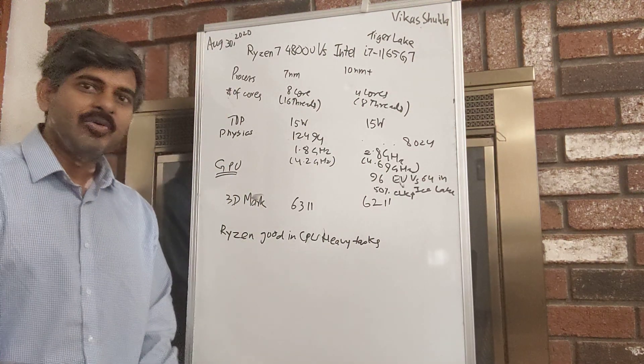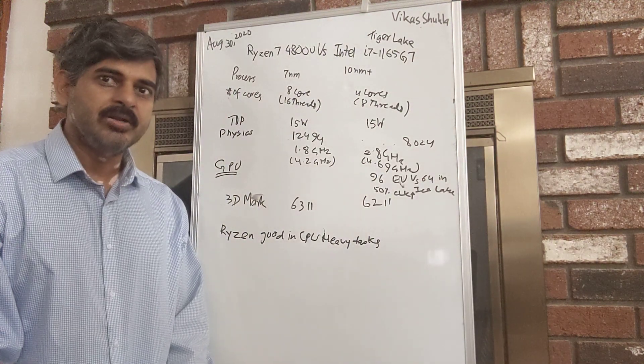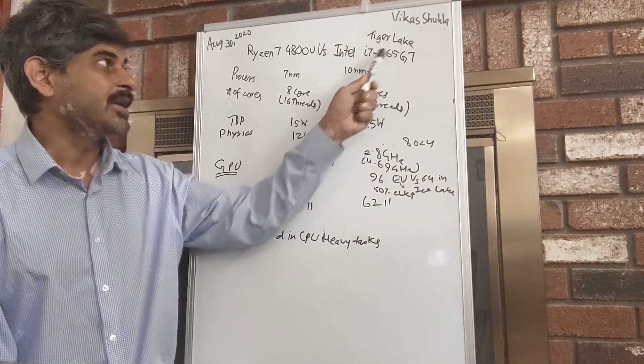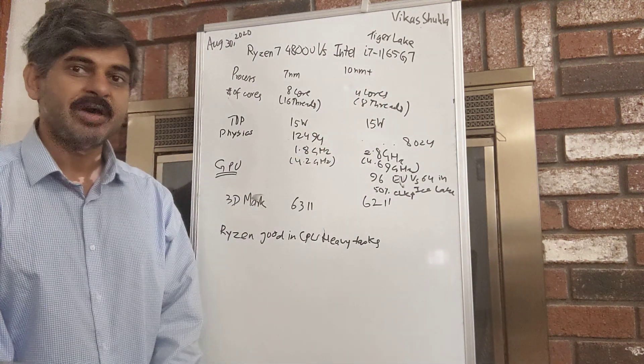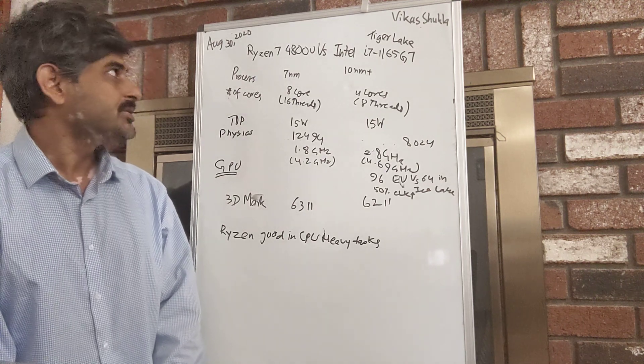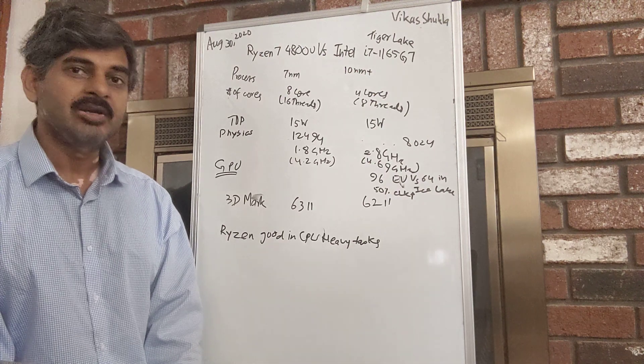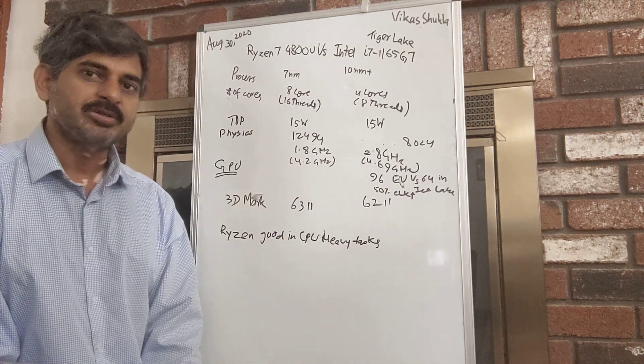In this video I wanted to give a quick update on the performance difference between Intel's Tiger Lake i7-1165G7 and AMD's Ryzen 7 4800U, both of them being ultra portable notebook processors.